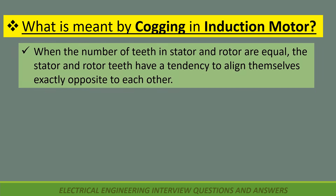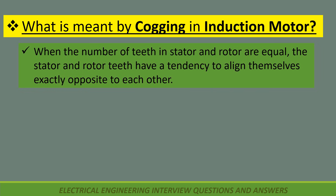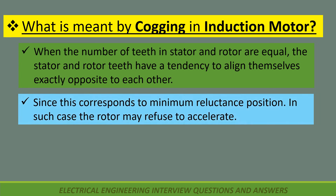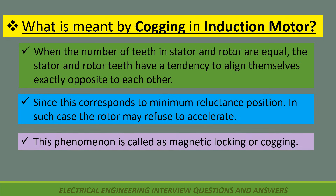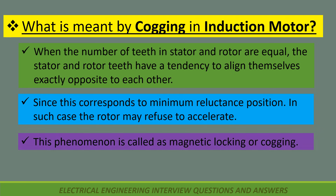What is meant by cogging in induction motor? When the number of teeth in stator and rotor are equal, the stator and rotor teeth have a tendency to align themselves exactly opposite to each other, since this corresponds to minimum reluctance position. In such a case the rotor may refuse to accelerate. This phenomenon is called magnetic locking or cogging.